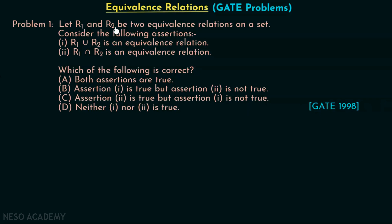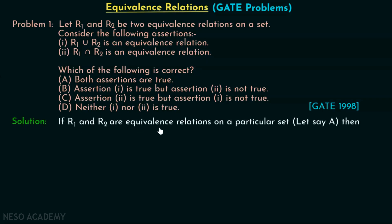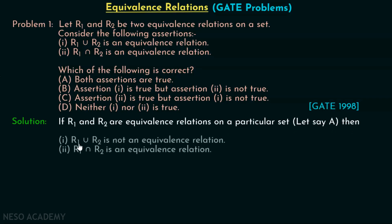It is given that R1 and R2 are equivalence relations on a particular set. We have to consider: R1 union R2 is an equivalence relation, and R1 intersection R2 is an equivalence relation. R1 union R2 is not an equivalence relation, while R1 intersection R2 is an equivalence relation. Option C is the correct option — assertion 2 is true but assertion 1 is not true.